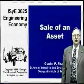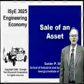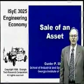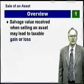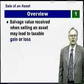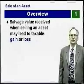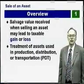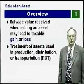In this lecture, we will talk about some special circumstances that occur when we sell an asset that has been depreciated with the depreciation accounting method. The salvage value we receive when selling an asset may be different from the book value, and that may lead to a taxable gain or a taxable loss. We will focus primarily on assets used in production, distribution, and transportation — called personal property — as opposed to real property, which is real estate.